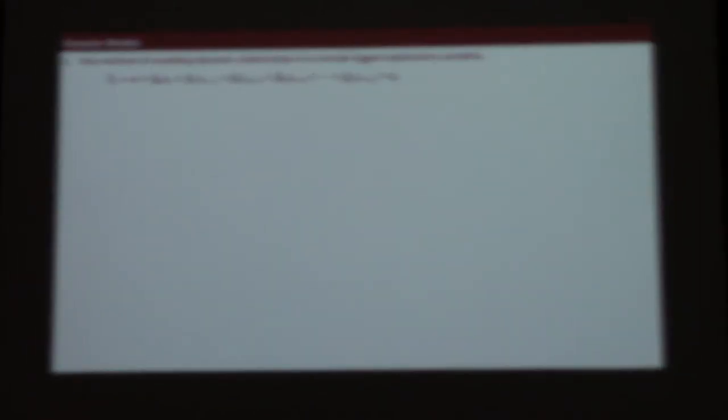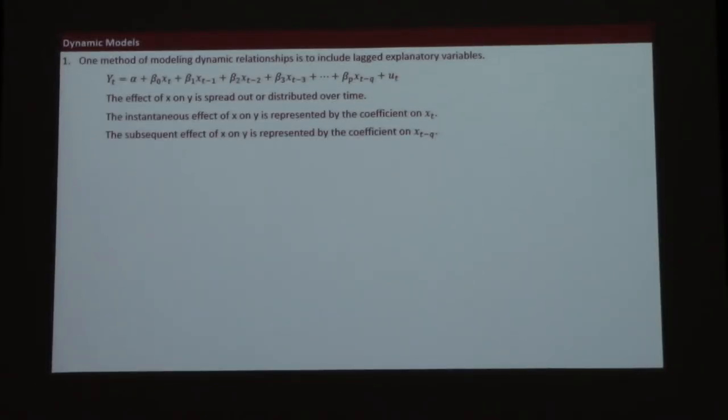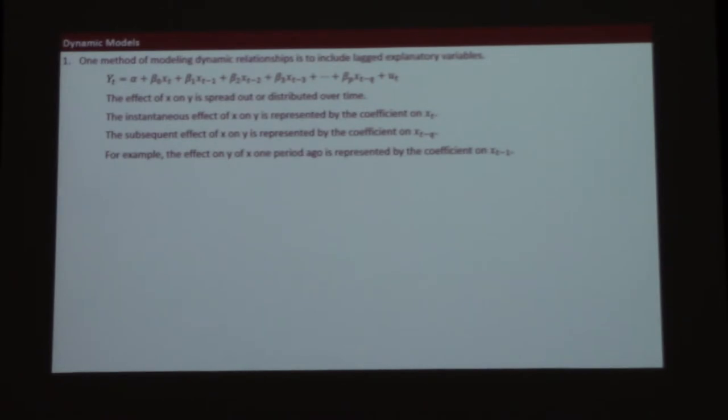This is going to be our workhorse to start with. The instantaneous effect is x_t, and the subsequent effects are x_{t minus q}, however many lags there are — it's a pretty simple model.